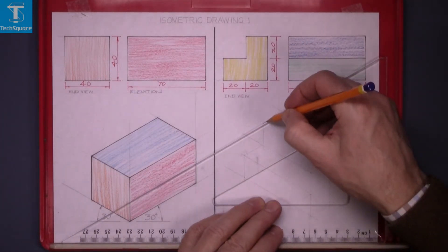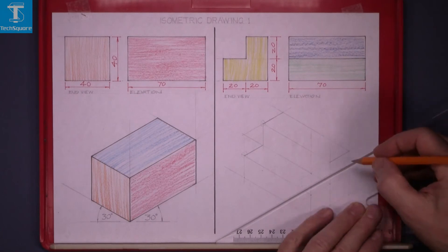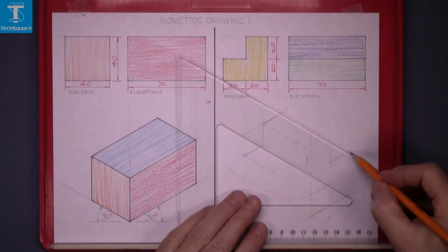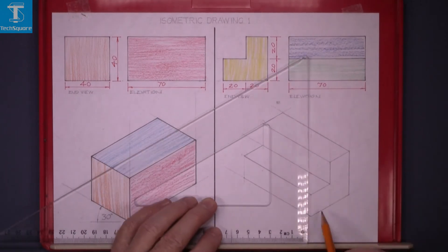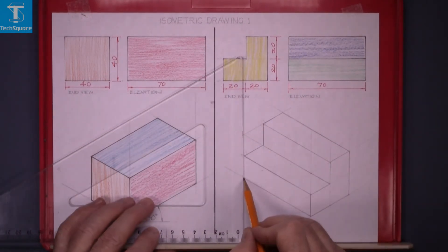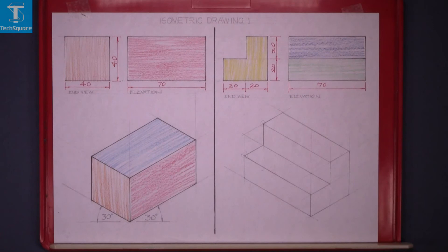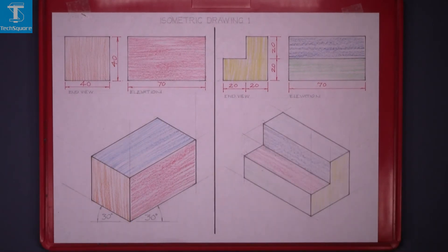And now line it in. So lines that are in the same direction, draw them all together. And that is your drawing complete. Add a little bit of color to it. And that is isometric drawing 1 complete.